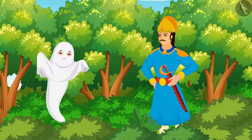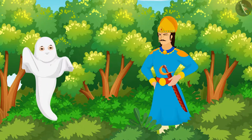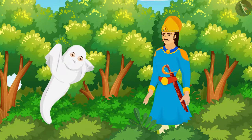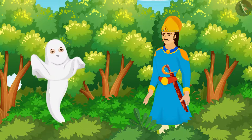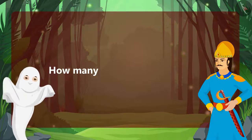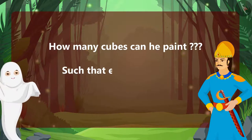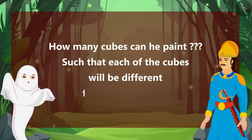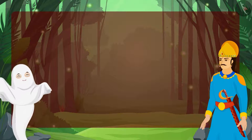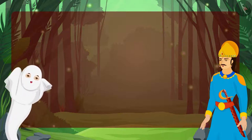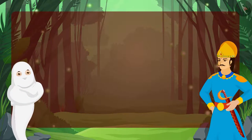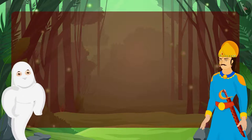The only condition is that no two cubes should be alike. Two cubes are considered alike if all sides of one cube match the corresponding sides of the other cube. How many cubes can the painter paint such that each of the cubes will be different from one another? Betal was very confident that Vikram would not be able to answer this puzzle correctly, but Vikram was confident and started to explain the answer.